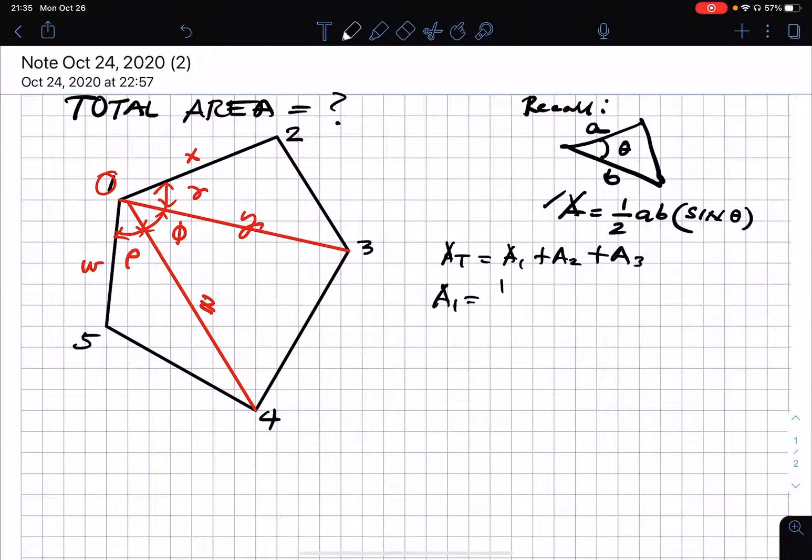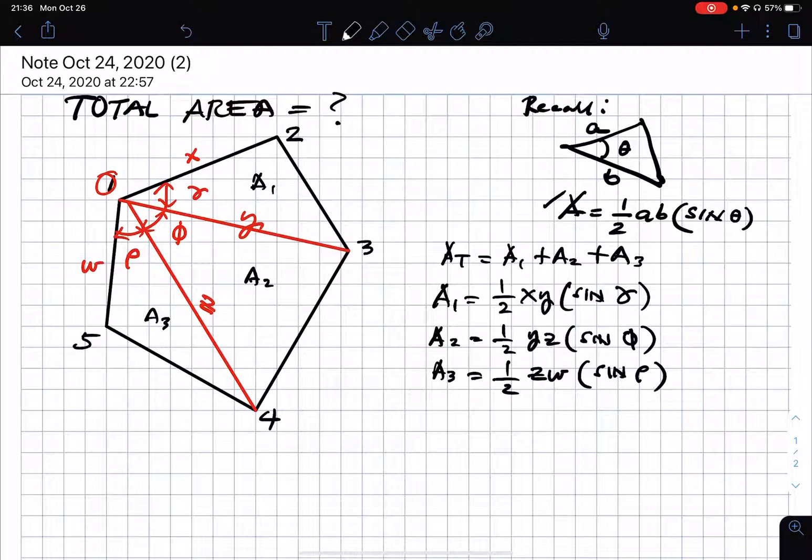Whereas area one will be one half x times y multiplied by sine alpha. Area two will be one half y times z multiplied by sine P. And area three will be one half z times w times sine rho. So all you need to do is to add area one, two, and three and that will be the total area.